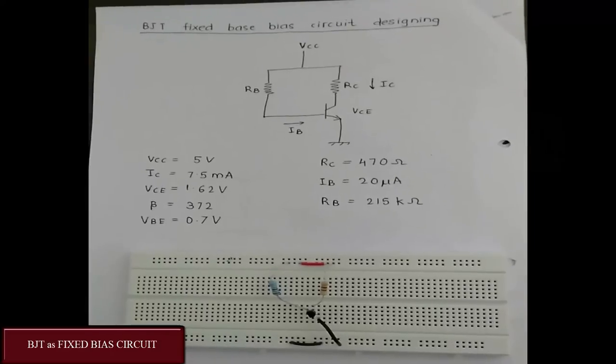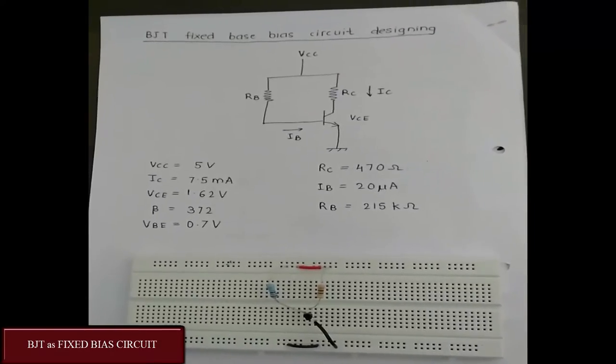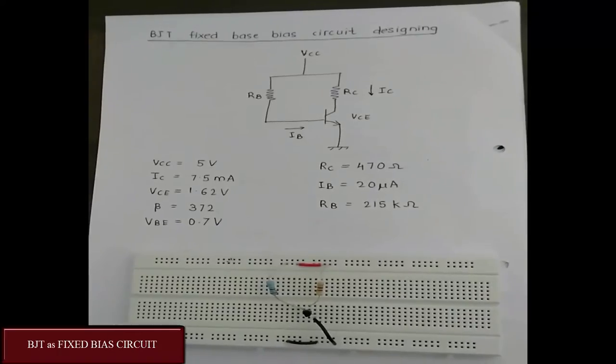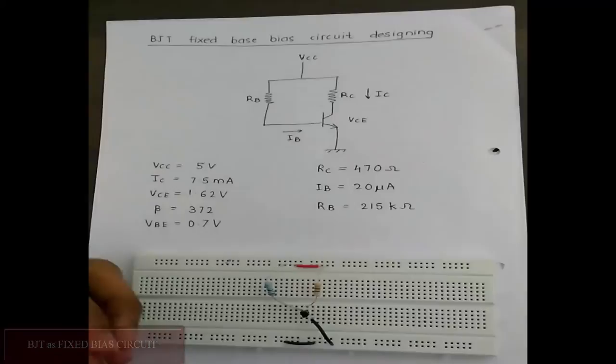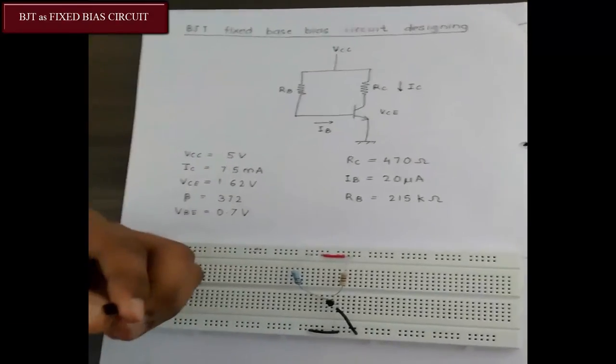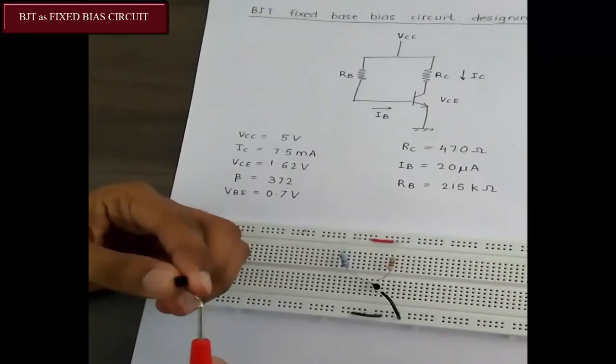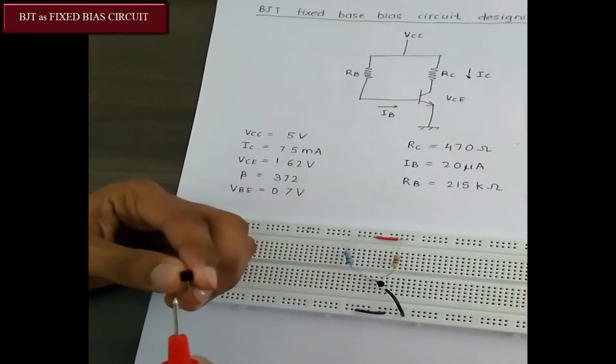As we have obtained the values of RC, IB, and RB for a fixed bias circuit, now let us implement the fixed bias circuit on a breadboard. Here note that for the BJT that we are using, if we keep the flat surface on top, the rightmost pin is emitter, the middle one is base, whereas the leftmost is collector: E, B, C.